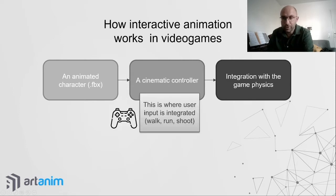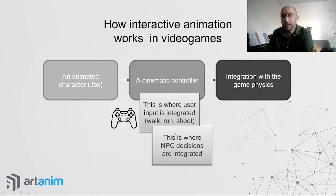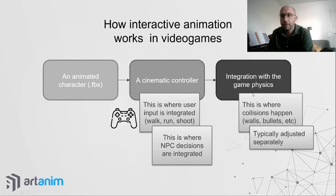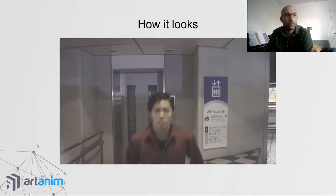The kinematic controller is where you integrate the input of the user — from the gamepad — telling the character to run, walk, or shoot. For an autonomous character, the gamepad is replaced by a system that makes decisions. The physics part is where the character collides with the environment or receives bullets, and this last part is typically adjusted separately.